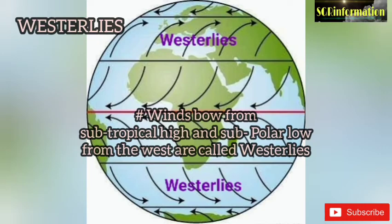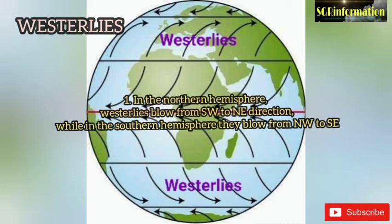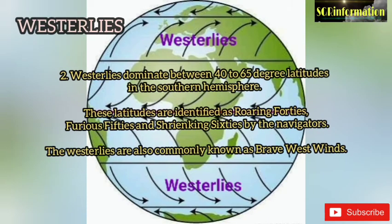Westerlies: winds blowing from subtropical high to subpolar low from the west are called westerlies. Number one, in the northern hemisphere westerlies blow from southwest to northeast, while in the southern hemisphere they blow from northwest to southeast. Number two, westerlies dominate between 40 to 65 degree latitudes. In the southern hemisphere these latitudes are identified by navigators as roaring 40s, furious 50s, and shrieking 60s.